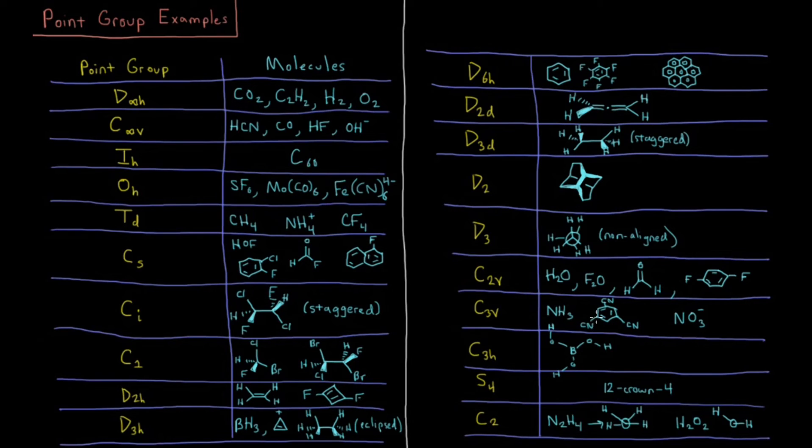Similarly, C3V, you have ammonia, 1,3,5-tricyanobenzene. I was trying to say nitrile, but I don't know how to say that when there's three of them. Also, the nitrate ion has the same type of geometry as NH3. It's trigonal pyramidal molecules, or C3V.